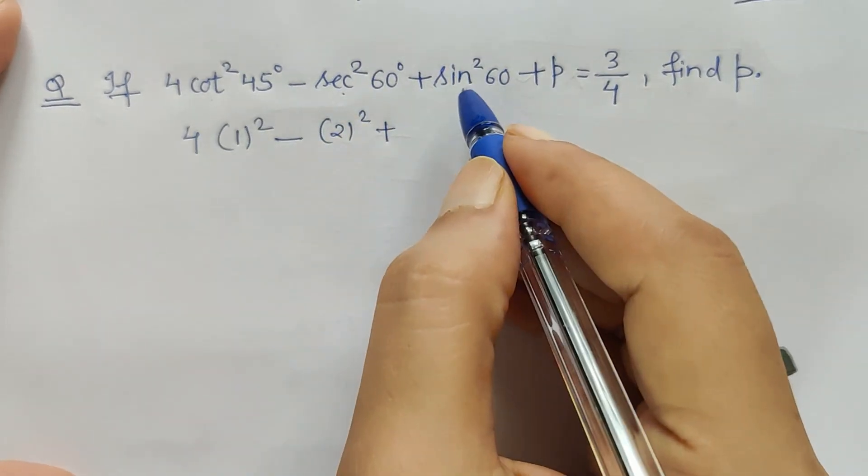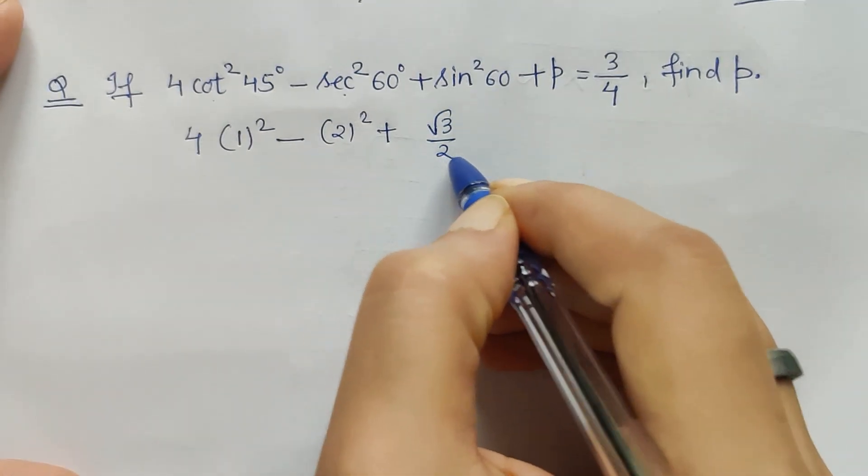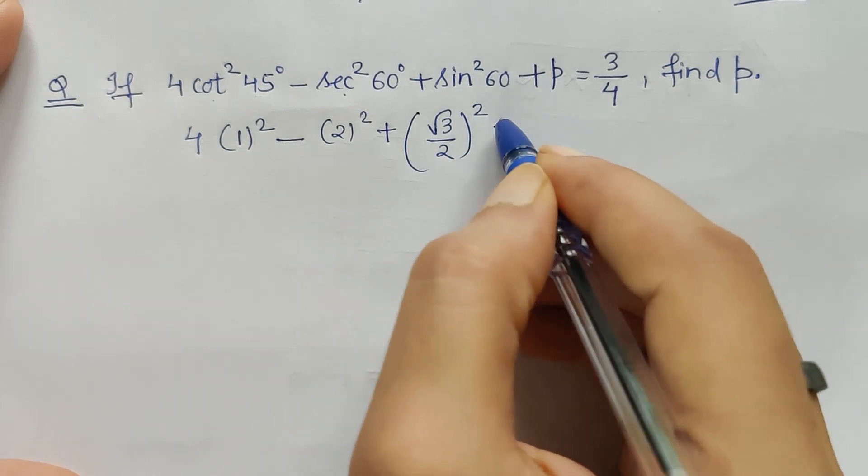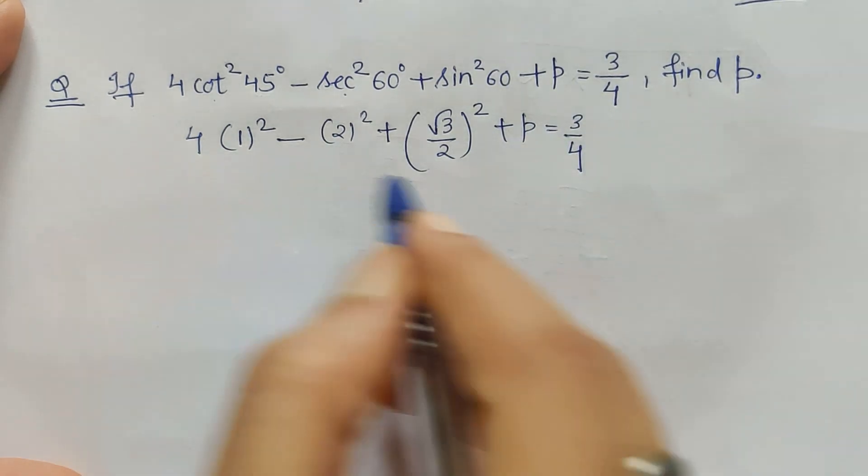Plus sin 60°. Sin 60° is √3/2, so I write √3/2 here, and since we have square here, so I put square. Plus p is equal to 3/4. Now let's simplify it.